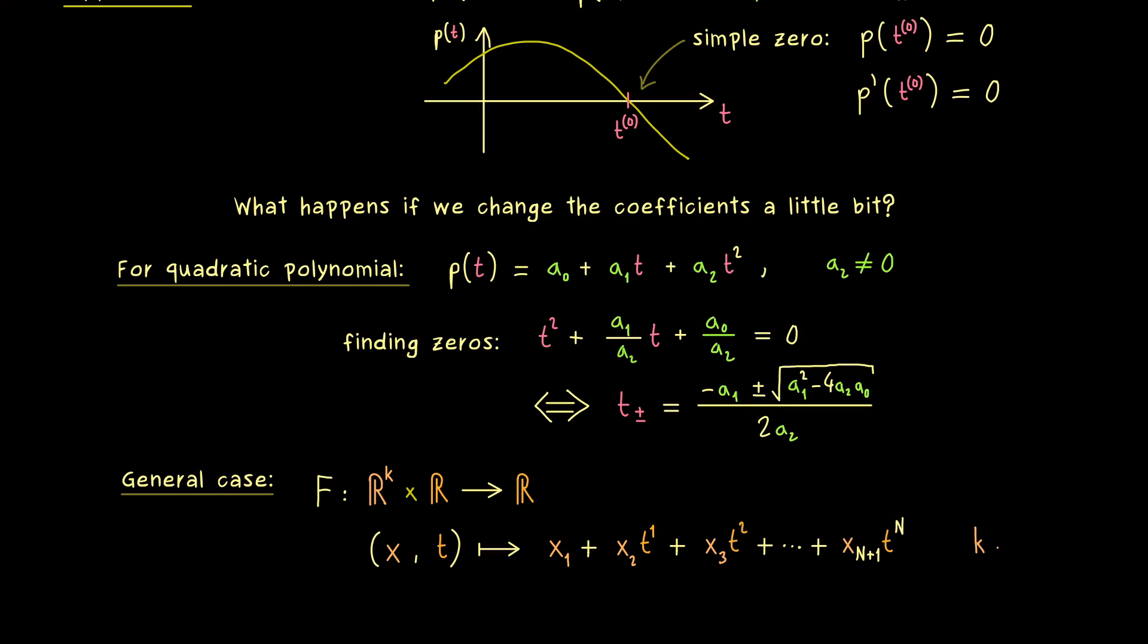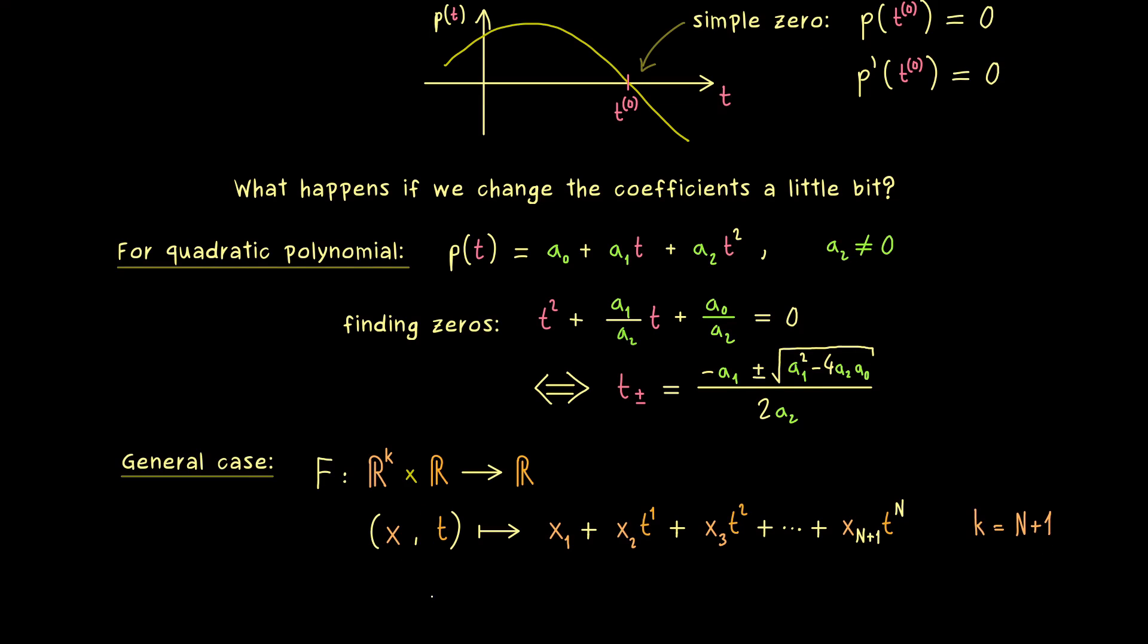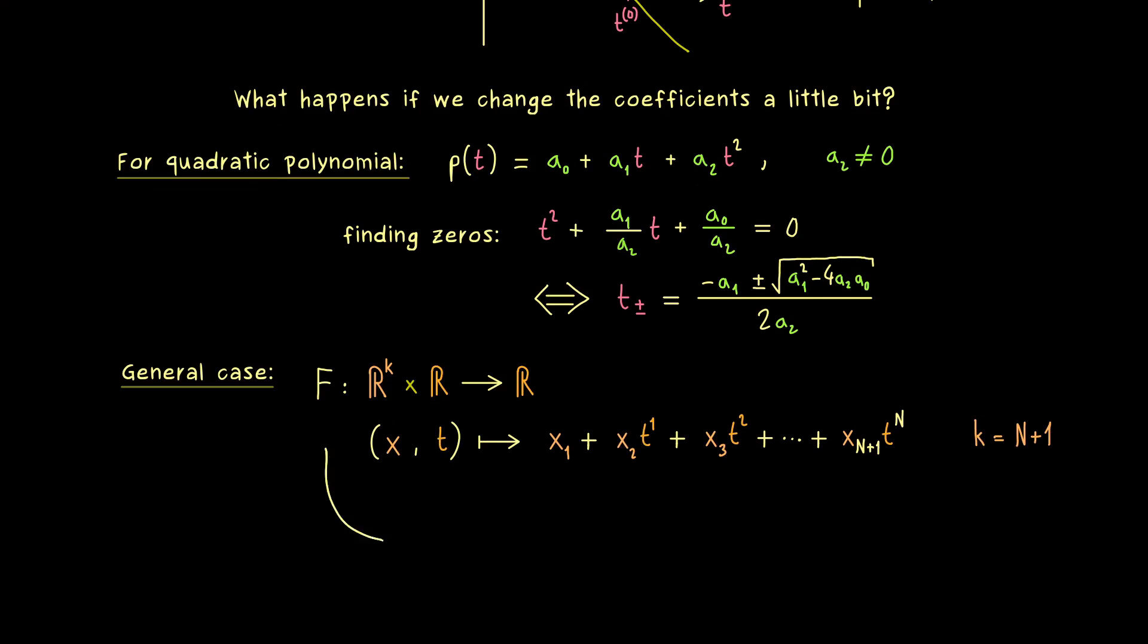Okay but now we see that the whole function capital F is definitely a C∞ function. And moreover we also have a nice zero for it. Namely we just have to put in the original coefficients and t₀ from before. More precisely we have to find the point x⁰ which is given as the coefficient a₀, coefficient a₁ and so on. So there we have our original polynomial where t₀ should be a simple zero.